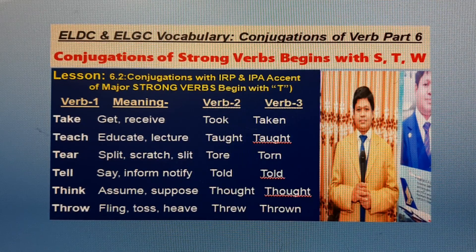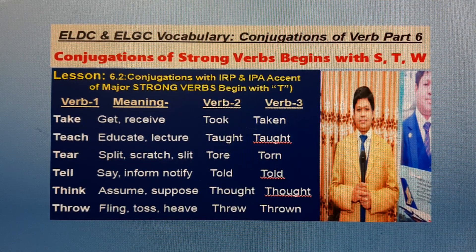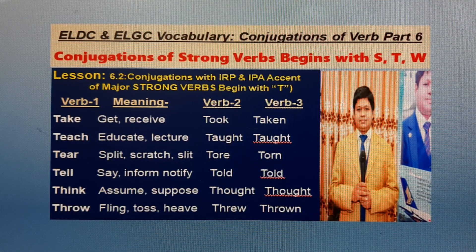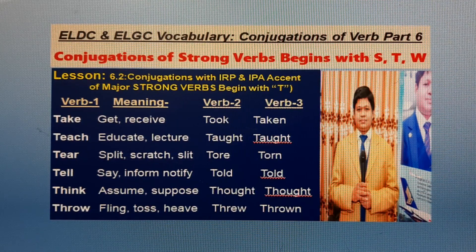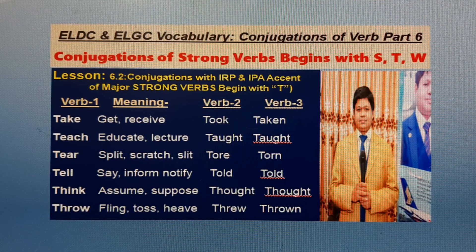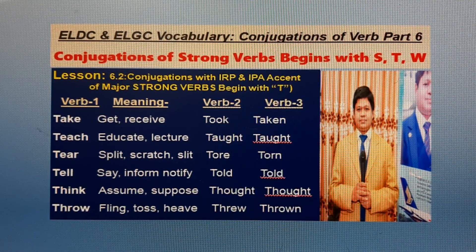Verb B1: Think. English meaning: Assume, imagine. Bangla meaning: Chintakura. B2: Thought. B3: Thought. Verb B1: Throw. English meaning: Fling, toss. Bangla meaning: Nikibkura. B2: Threw. B3: Thrown.